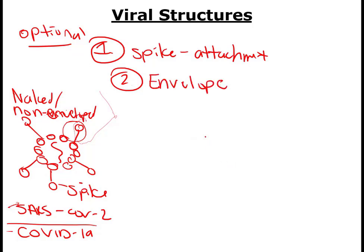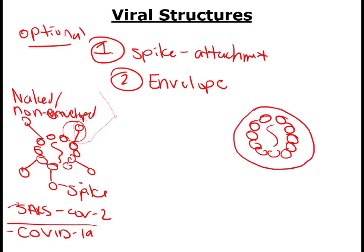Some viruses have another optional component called an envelope. You still have the nucleic acid packaged in a capsid, but then there's a second layer around it — the envelope — which is actually a lipid bilayer with two layers. The envelope is picked up from the host cell's membrane when the virus is being released from the cell; it essentially steals some of its host cell's membrane, which becomes the envelope.